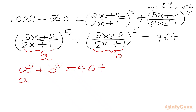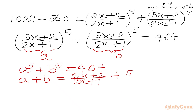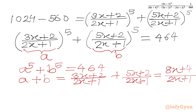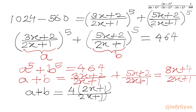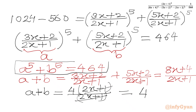Now we will evaluate A plus B. A is (3x+2)/(2x+1) and B is (5x+2)/(2x+1). The denominator is common, so we take LCM as (2x+1) and add both numerators to get 8x+4. Taking 4 common from the numerator gives A+B = 4(2x+1)/(2x+1), and these brackets cancel. So our second equation is A + B = 4.